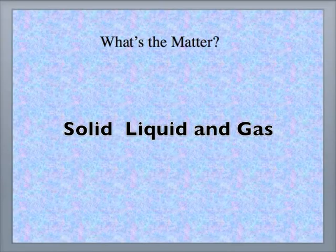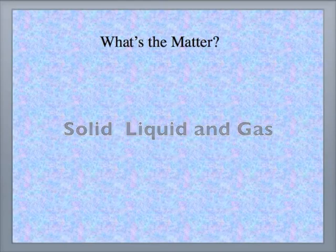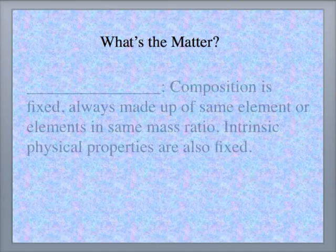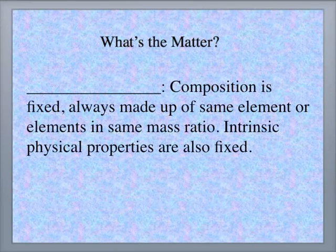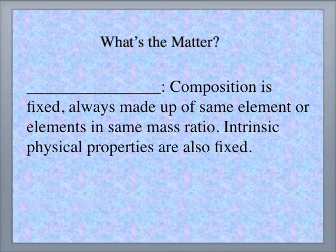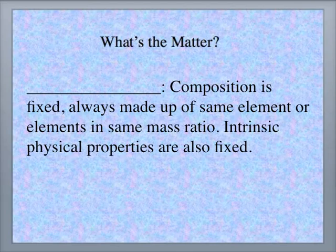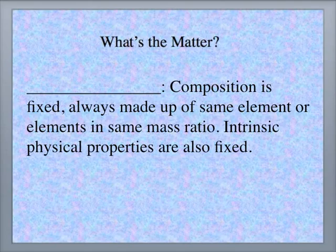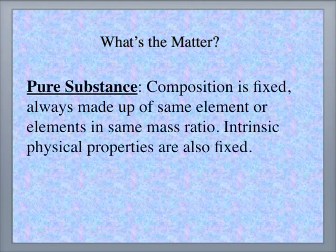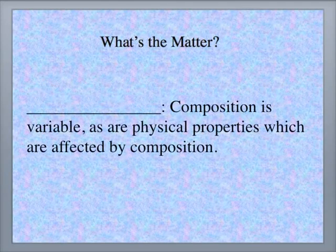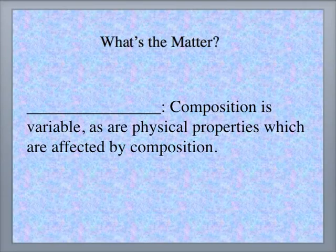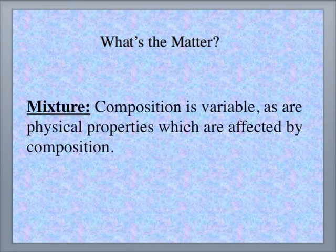But for each of these states, we can classify matter in terms of a fixed or variable composition. Matter in which the composition is fixed is always made up of the same element or elements in the same mass ratio. Physical properties such as boiling point, melting point, density are also fixed. This is a description of a pure substance. Another type of matter has variable composition with variable properties. This type of matter is called a mixture.